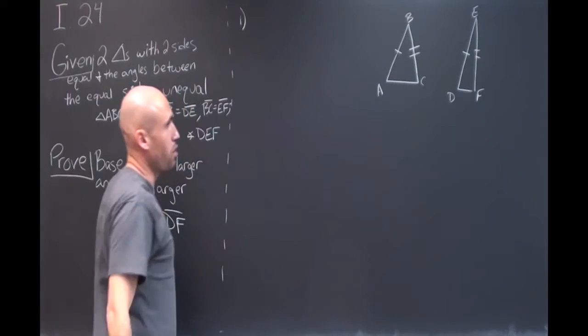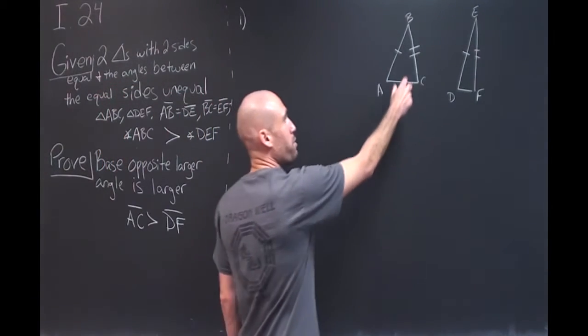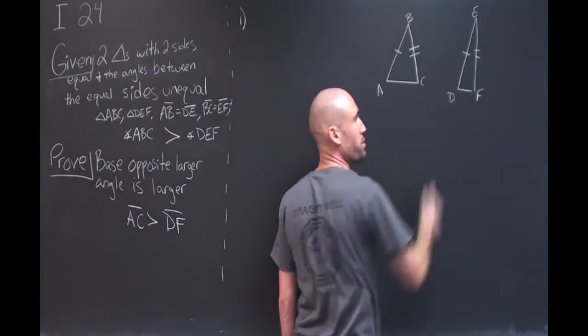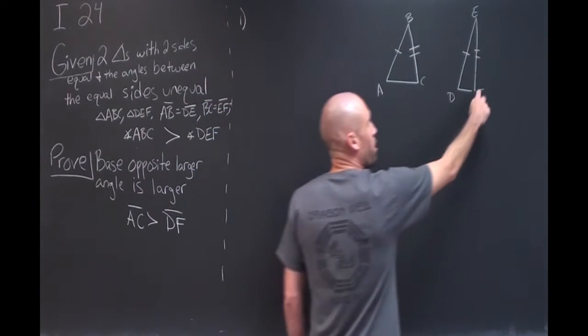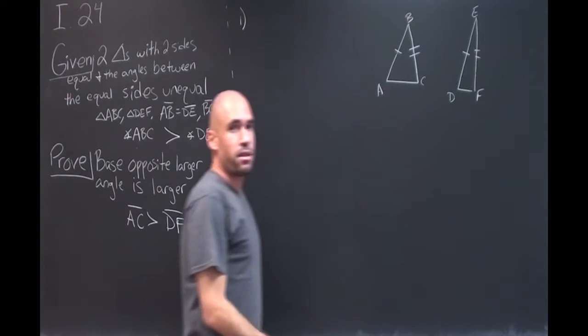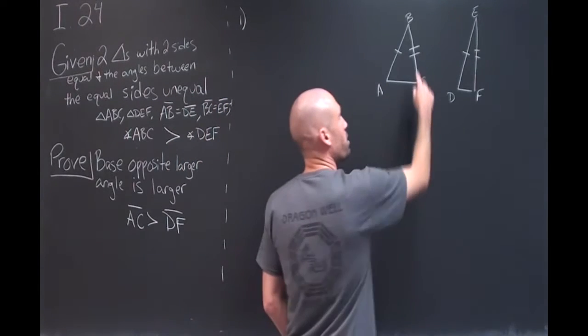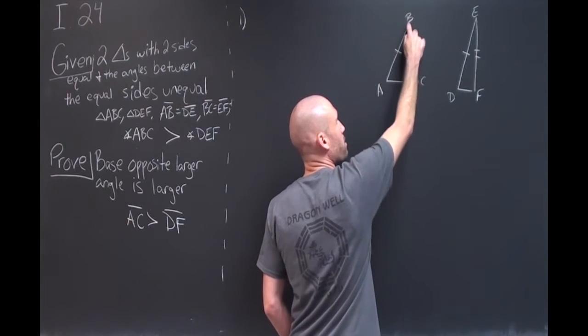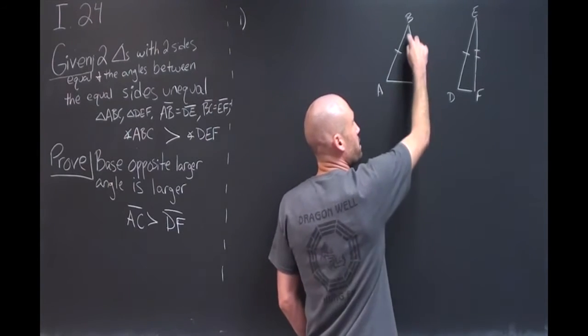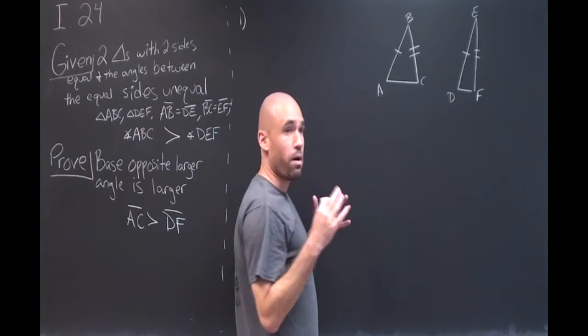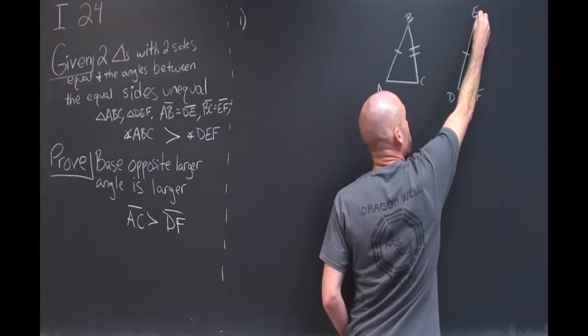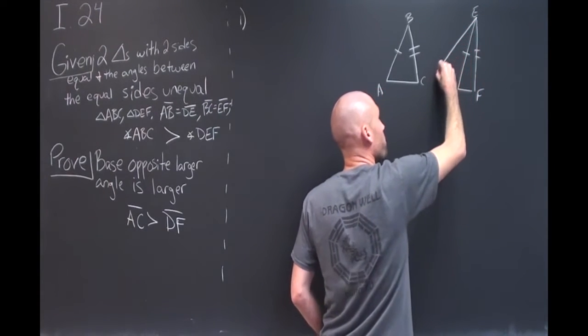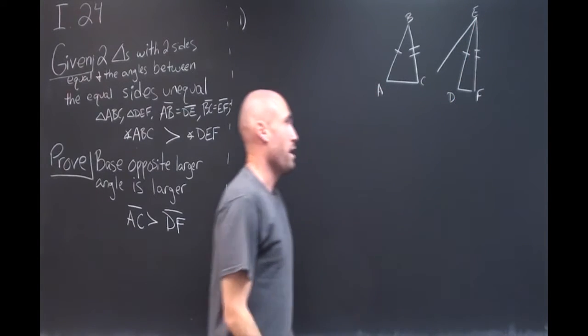So for our first step we're going to map this triangle onto this one so that we can compare the two of them right next to each other. So on the line FE at the point E we are going to construct an angle equal to angle ABC. Since angle ABC was greater, that's our given, then this angle here means this line is going to fall outside this angle.